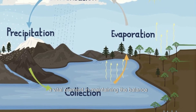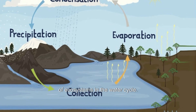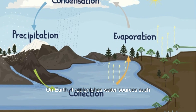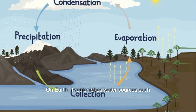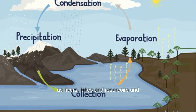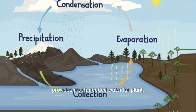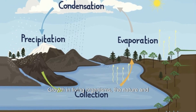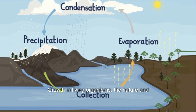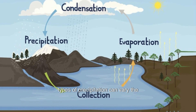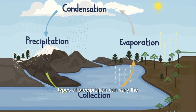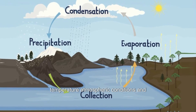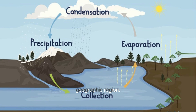Precipitation is a vital element in maintaining the balance of ecosystems and the water cycle on Earth. It replenishes water sources such as rivers, lakes, and reservoirs and provides much needed water for plant growth and living organisms. The nature and types of precipitation can vary depending on temperature, atmospheric conditions, and geographic region.